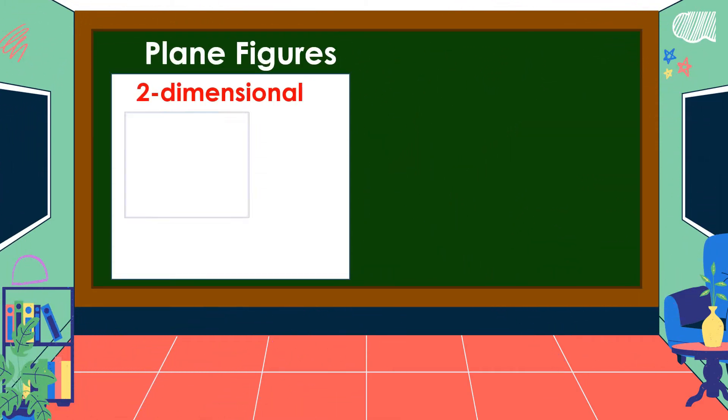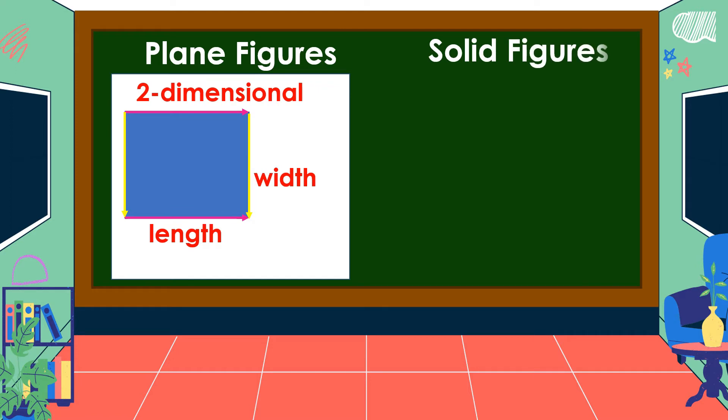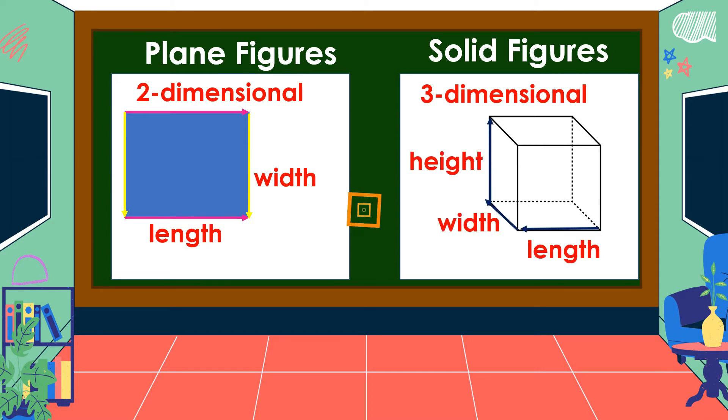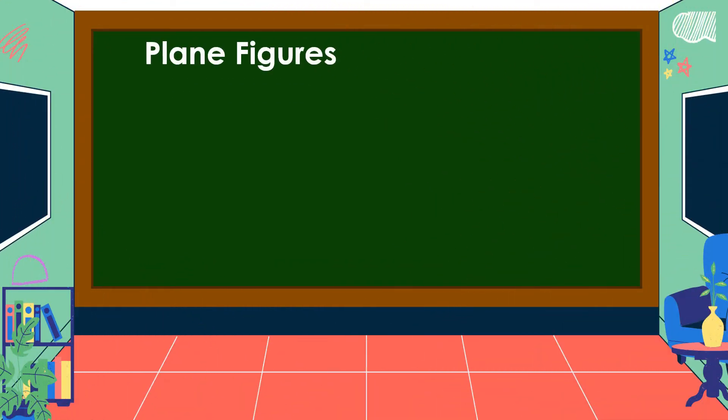Plane figures are flat, two-dimensional or 2D figures. The dimensions are the length and the width, while solid figures are three-dimensional or 3D figures. The dimensions are the length, the width, and the height. Plane figures do not